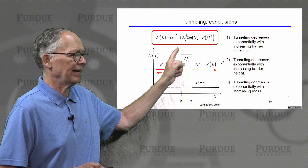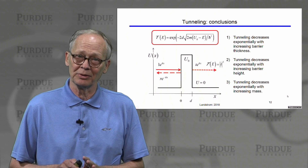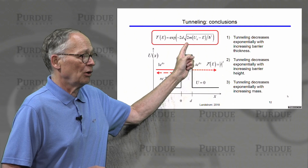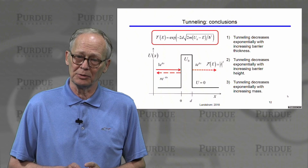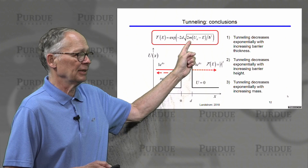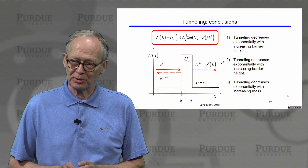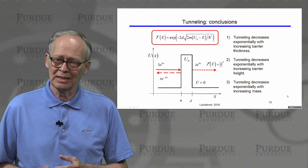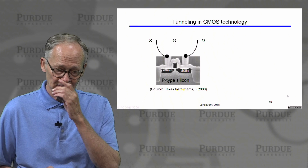Examining this result, we can identify three key takeaways. First, the transmission probability decreases exponentially with the thickness of the barrier. Second, the transmission probability decreases exponentially with the height of the barrier. Third, the tunneling probability decreases exponentially as the mass of the particle increases — so a light effective mass leads to more tunneling than a heavy effective mass.